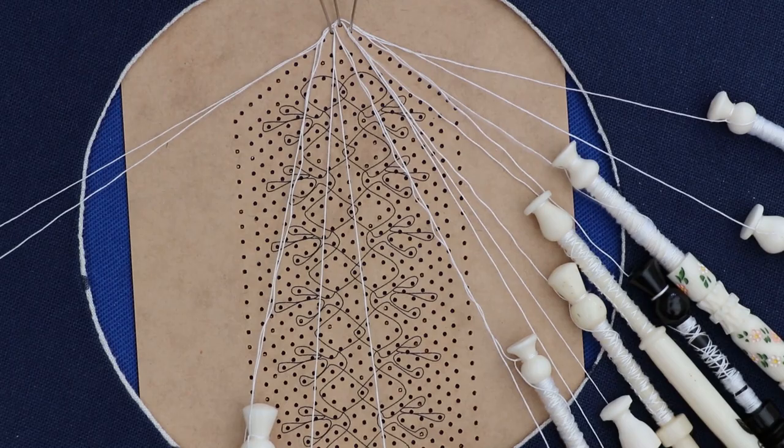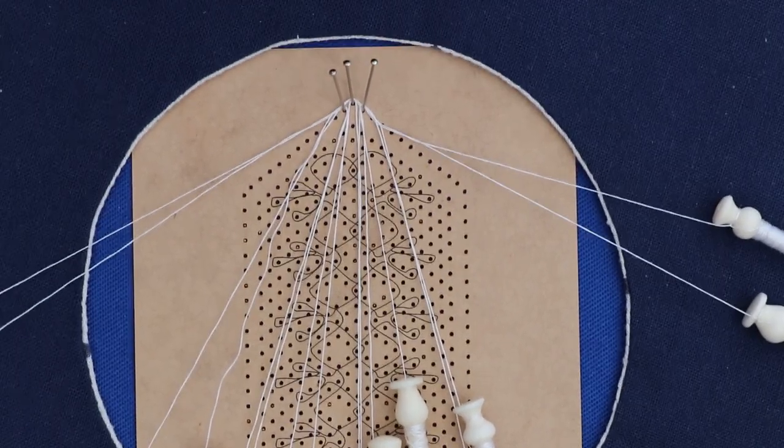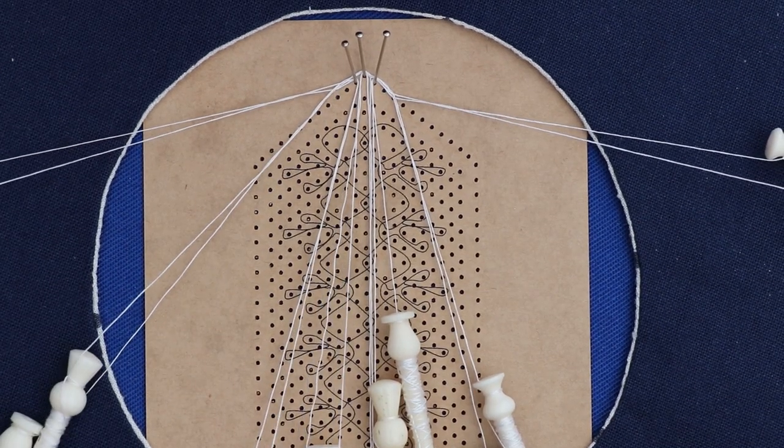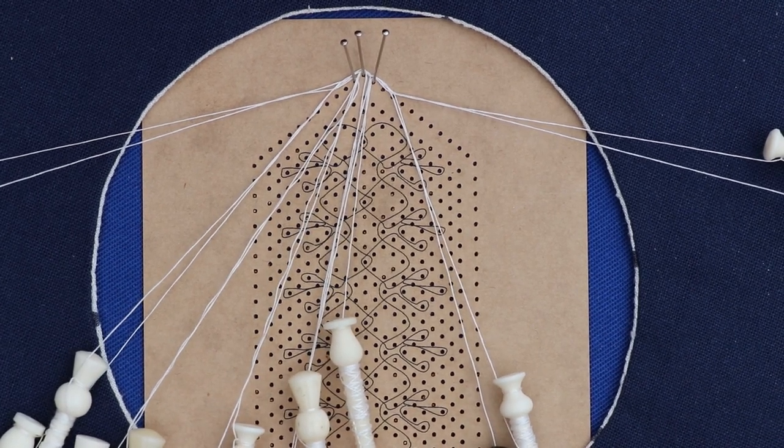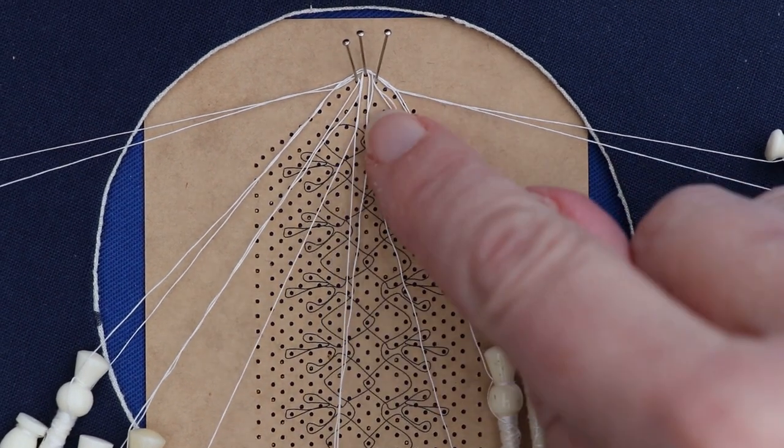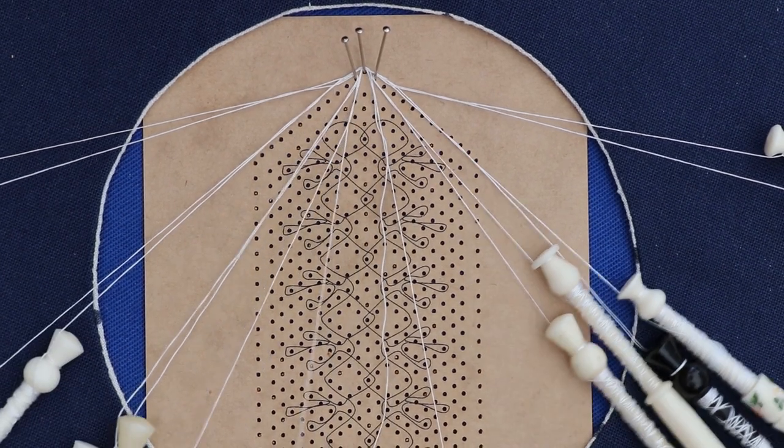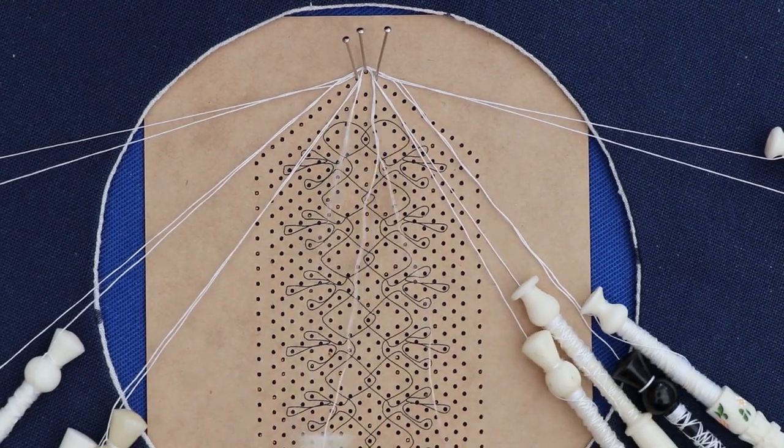You now have quite a few pairs here. You have the outside edge pair for both, and you also have one, two, three, four, five, six pairs. To start and to fill this top piece, we start in the middle as you would with a spider, and cloth stitch three on the right through the three on the left.